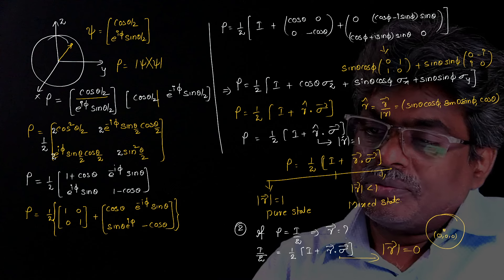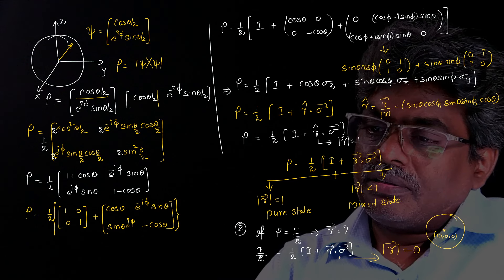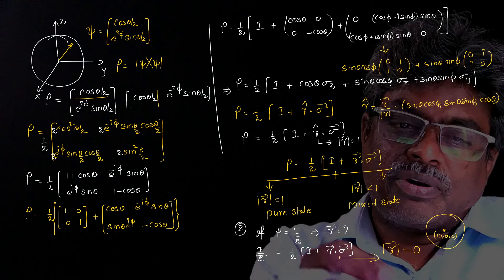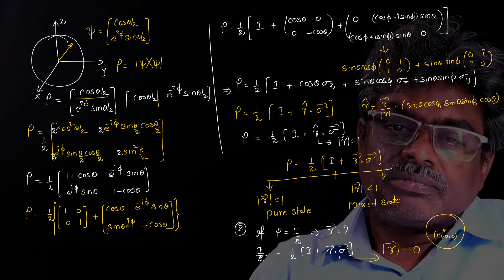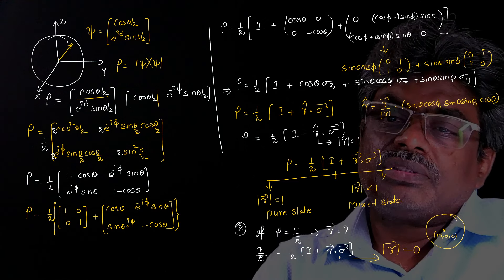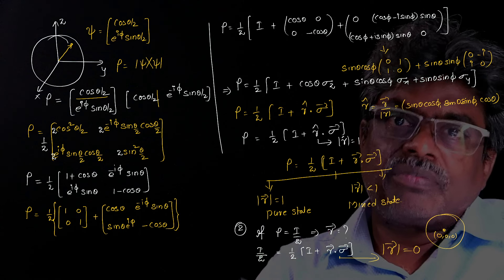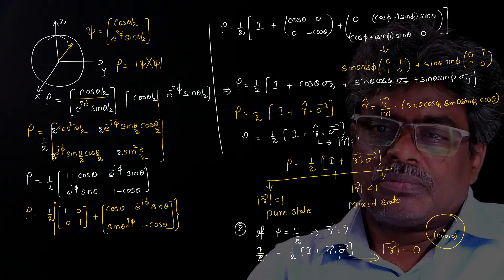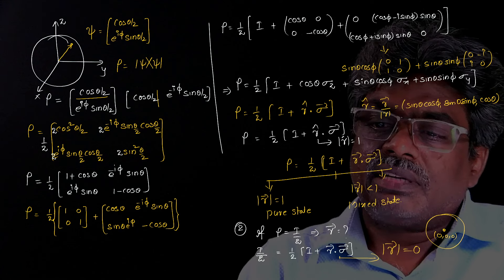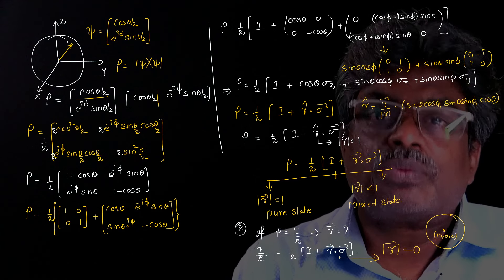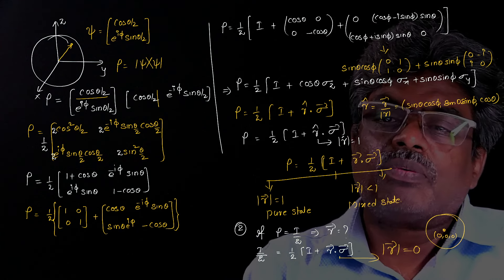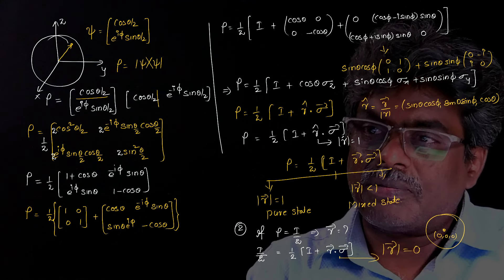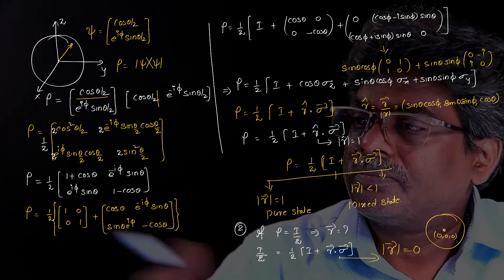The third and fourth parts are the reverse — we take that point again and check whether the magnitude of r equals 1 or not. So this completes the derivation corresponding to rho equal to 1/2 times (I plus r-bar dot sigma-bar). Thank you.